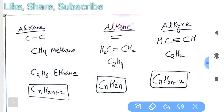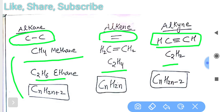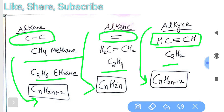First, alkane: whenever a carbon-carbon single bond is present, we call it an alkane. When there is a double bond, it is called an alkene. When there is a triple bond between carbon and carbon, we call it an alkyne. For example, methane is an alkane. When converted to alkene or alkyne form, it becomes methene or methyne. Their general formulas are: alkane CₙH₂ₙ₊₂, alkene CₙH₂ₙ, and alkyne CₙH₂ₙ₋₂.